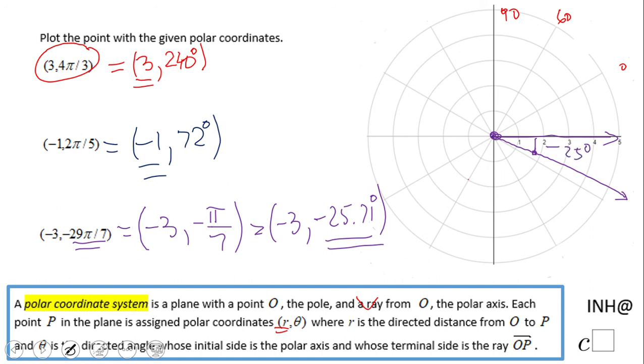And this one is negative 3, so I'm going to have to move somewhere right here - 1, 2, right here. This will be the point, the last point. So be careful of these negative values in your polar coordinates.